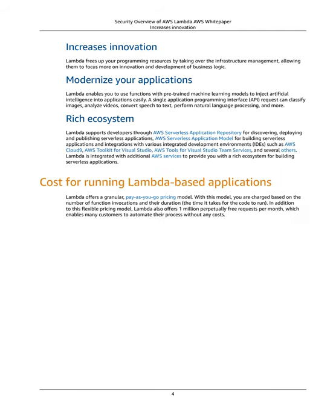Increased Innovation: Lambda frees up your programming resources by taking over infrastructure management, allowing them to focus more on innovation and development of business logic. Modernize Your Applications: Lambda enables you to use functions with pre-trained machine learning models to inject artificial intelligence into applications easily. A single API request can classify images, analyze videos, convert speech to text, perform natural language processing, and more. Rich Ecosystem: Lambda supports developers through AWS Serverless Application Repository, AWS Serverless Application Model, and integrations with IDEs such as AWS Cloud9, AWS Toolkit for Visual Studio, and several others.